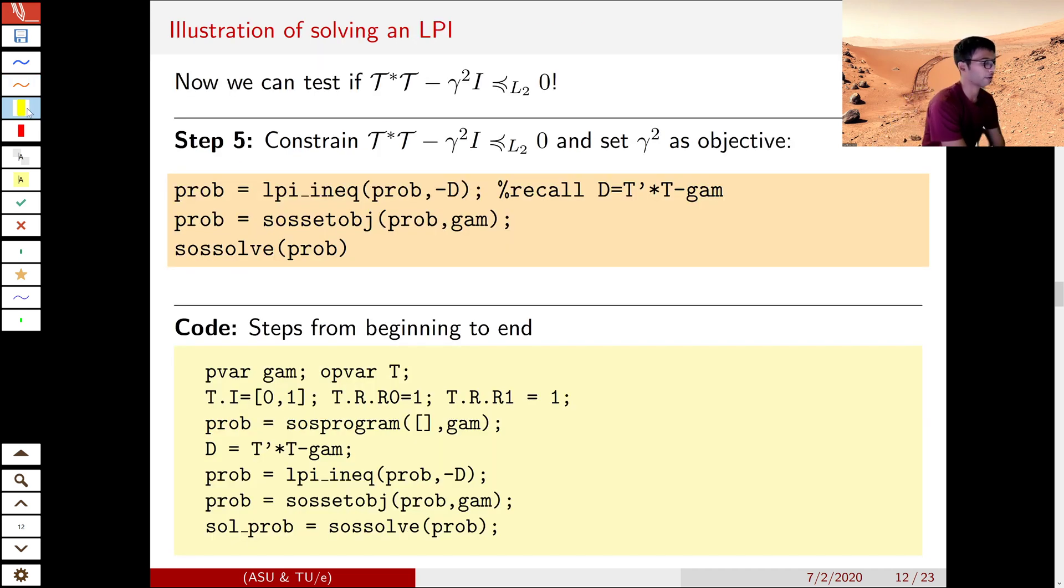So back to the example. Now we can constrain this operator to be negative definite using the lpi_ineq. We can constrain the objective, or we can set the objective by using objective function in SOSTOOLS. Then we just solve it using sossolve.